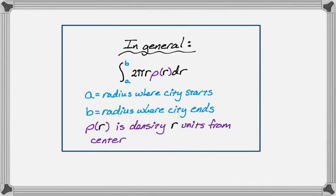In general, when you have a radial density function to find the population, you do the integral from a to b of 2 pi r times rho of r dr. a is the radius where the city starts, b is the radius where the city ends, and rho of r is the density r units from the center. That's the whole thing. I hope you found this helpful and good luck.